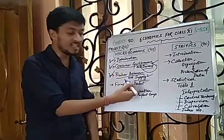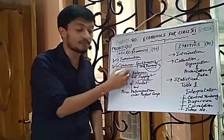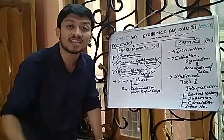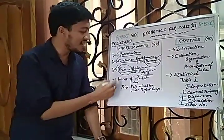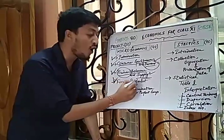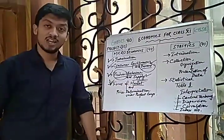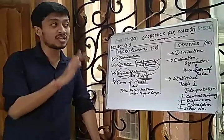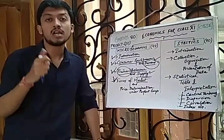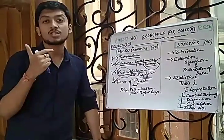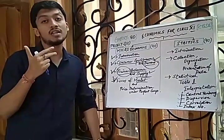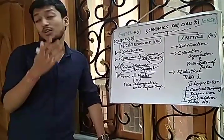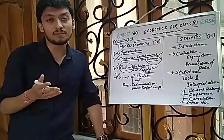After completing the supply chapter, we move to the next topic: forms of market, where the producer sells their output. According to CBSE, we have four types of market: perfect competition, monopoly, and the third is monopolistic competition.